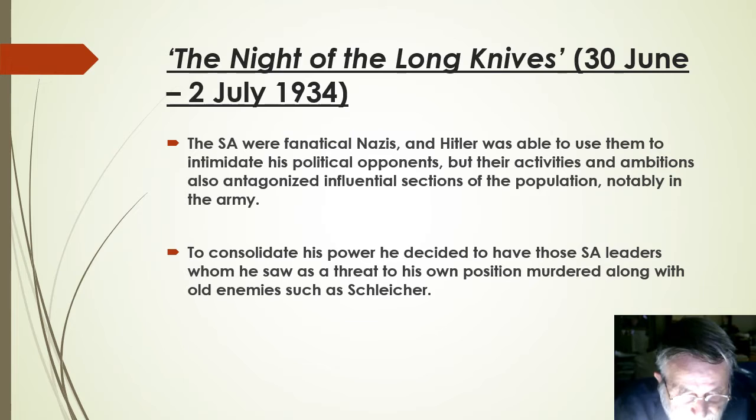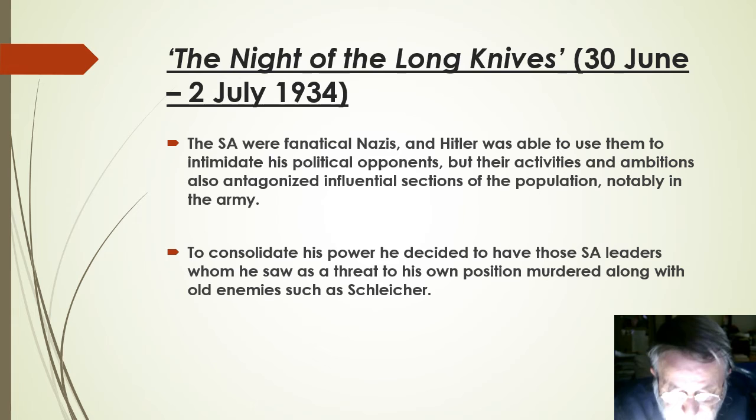By the summer of 1934, Hitler had made his decision, and in June 100–200 SA leaders were murdered along with some of Hitler's old political foes like von Schleicher. This is the so-called Night of the Long Knives.